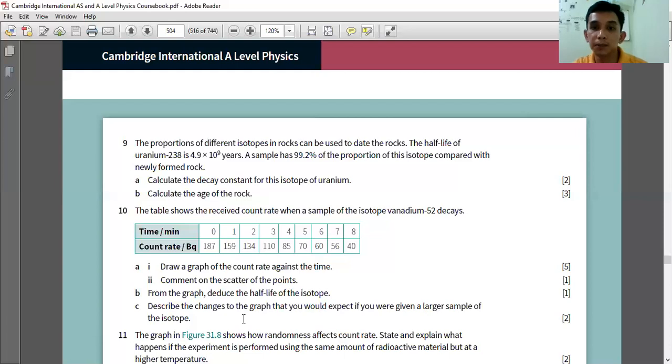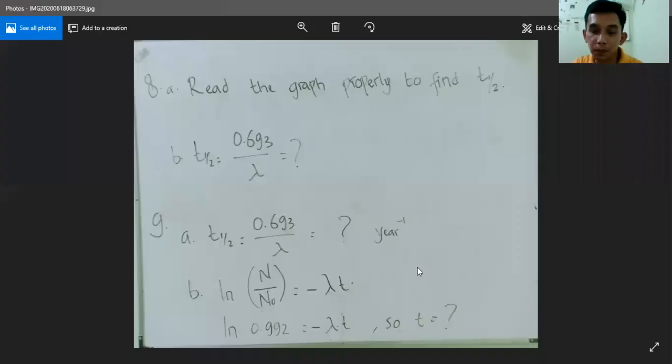For number nine, because we know the decay constant, then we can find the half-life easily. Half-life is equal to 0.693 over the lambda. The unit will be per year.